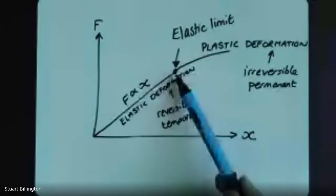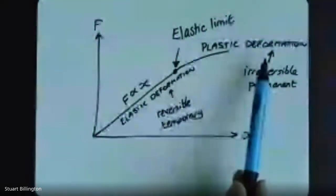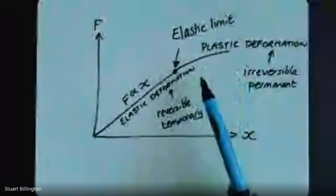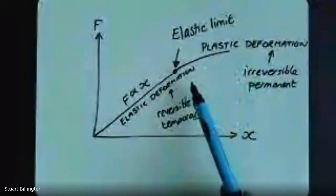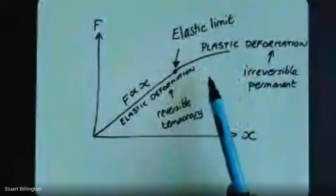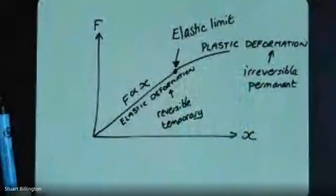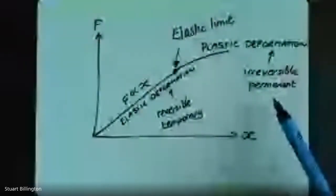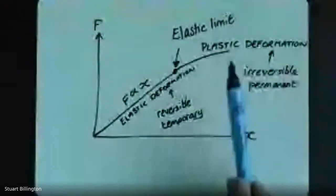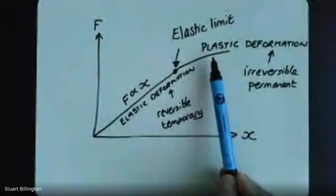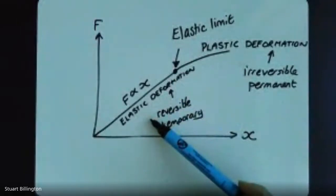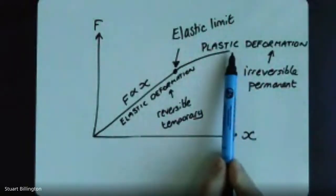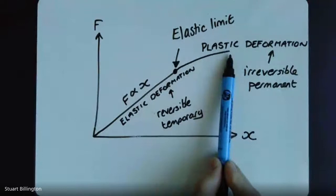That means the object is now permanently deformed. When we relax the force, those atoms are not going to go back to where they came from - they've settled in a new equilibrium position and forged new bonds with the new atoms they've come to lie next to. The deformation is now a permanent one. We refer to this permanent deformation as plastic deformation: elastic when it's temporary and reversible, plastic when it's permanent and irreversible.